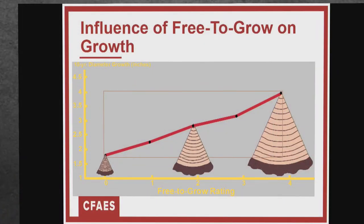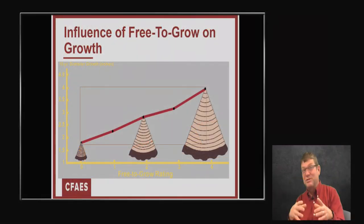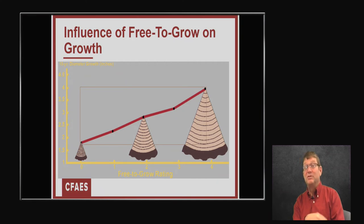Here's data from Ohio, Pennsylvania, and West Virginia from Arlen Perkey. On average, trees with a free-to-grow rating of zero grow about two inches every 10 years — not a whole lot. If we can get it to free-to-grow four, we can increase that to almost four to four-and-a-half inches per decade. So we can literally double the growth just by giving them space.